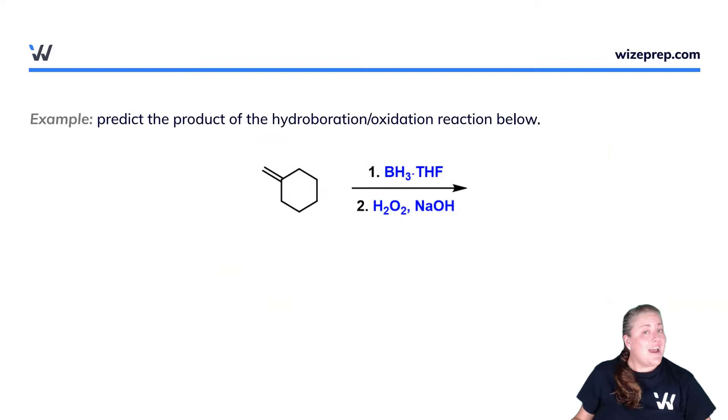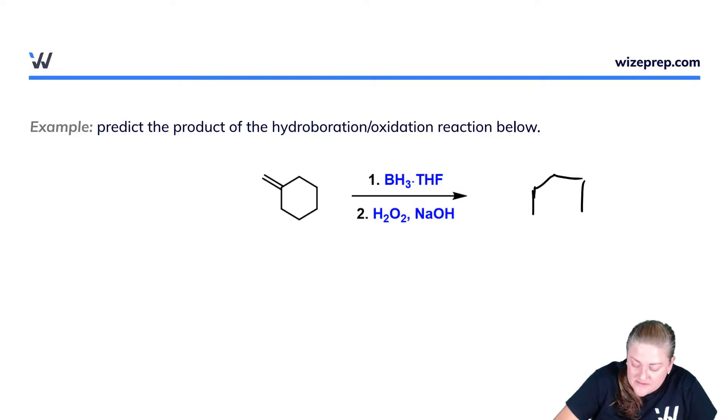We have a hydroboration-oxidation reaction with anti-Markovnikov addition and syn addition. This happens at the alkene: the OH goes to the less substituted carbon, the hydrogen goes to the more substituted carbon. We should check if this is chiral, and it's not, so that's the product. This is a nice complement to acid-catalyzed hydration, providing the anti-Markovnikov product versus the Markovnikov product from acid catalysis.